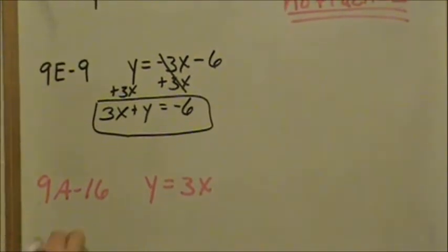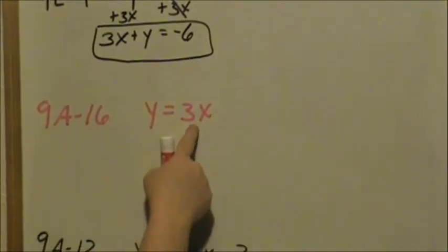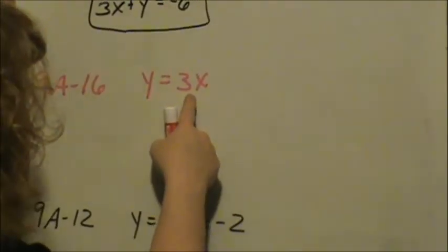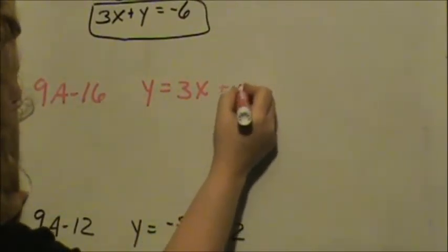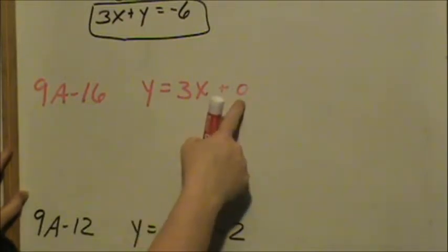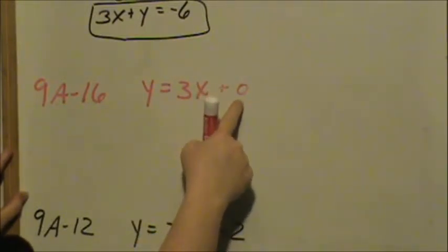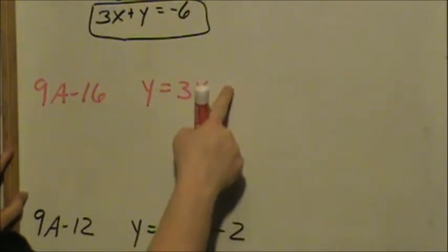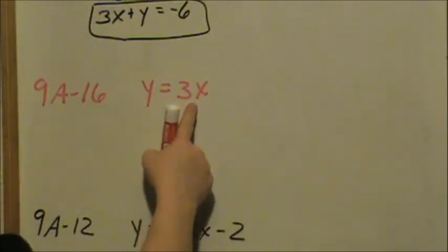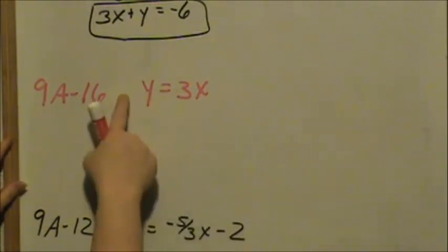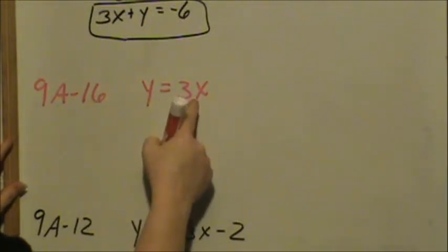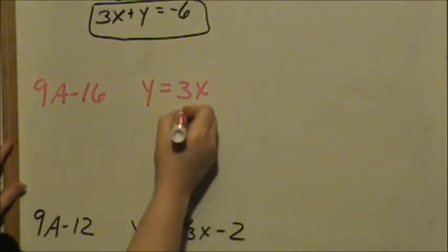Now let's look at 9a16. Y equals 3x — that is in slope-intercept form. You can see the slope is 3. What is your y-intercept? Plus 0. We just don't write it, so you have a y-intercept of 0, crossing at the origin. Now we want to put it in standard form, meaning x's and y's on the same side. I want to get my x over here with my y. Since x is being added, I need to subtract it for it to cancel.